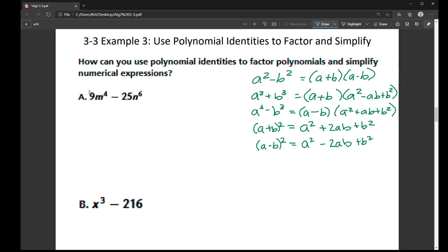Now if I look at that, this is the same thing as 3m squared being squared minus 5 and then n to the third is being squared. So I'm going to use this difference of squares formula up here. And so what this does is this splits into two expressions being multiplied, one being plus, one being minus, where the value being squared goes in the front for the first term and then the back for the second term.